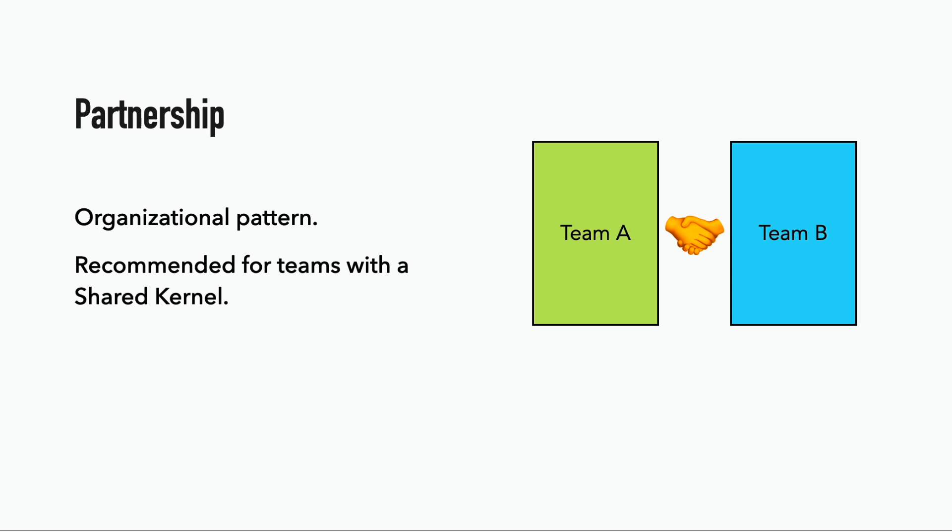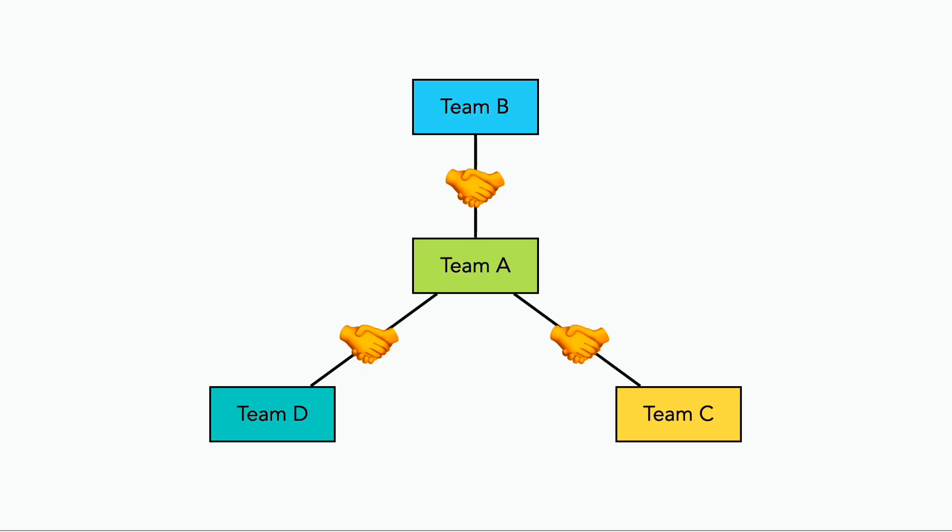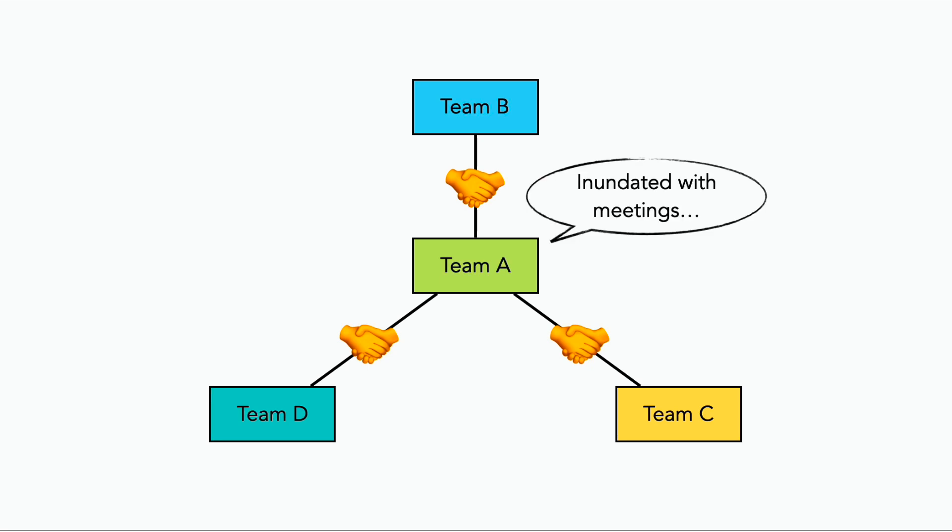One thing to look out for with the partnership pattern is when a team enters into a partnership with multiple other teams. When this happens, the team in the middle usually finds themselves inundated with meetings and struggles to find time to get any actual work done. They suffer from a lack of agency, where they can't even set their own agenda because they have too many partners to satisfy.